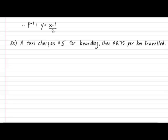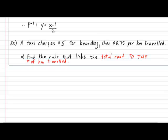They look very similar, except for one major difference. Let's take a look at the first question. Question A: I would like you to find the rule that links the total cost to the number of kilometers traveled. If you think very carefully about how this question is being asked, you should realize that the rule that you're going to write should show how the total cost is being affected by the number of kilometers traveled.